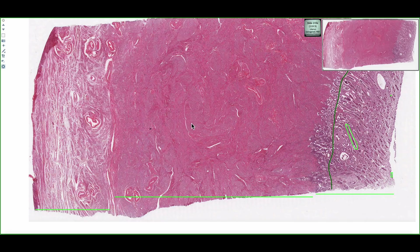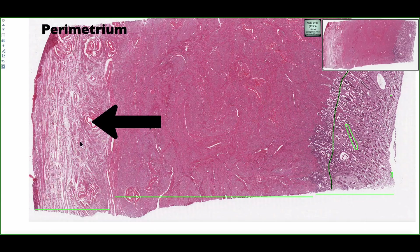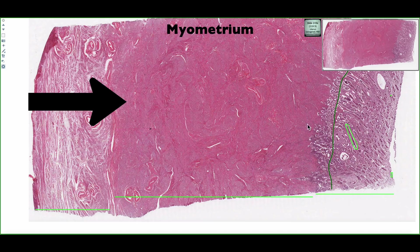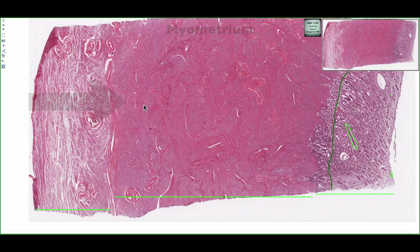The uterus can be defined into three coats. On the left-hand side, we can see the outer coat, which is the parametrium. Deep to this, we can see a large layer of smooth muscle. This is called the myometrium and consists of three indistinct layers.